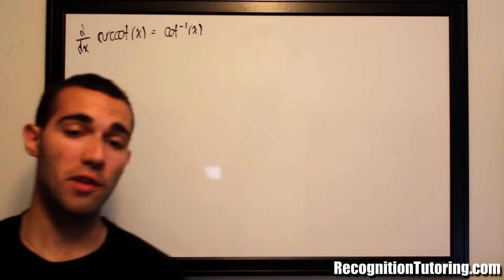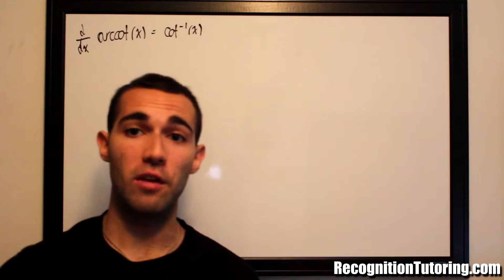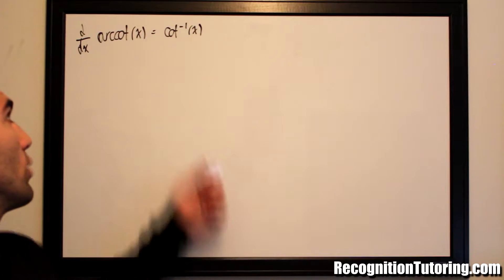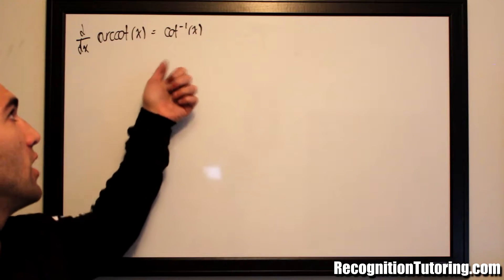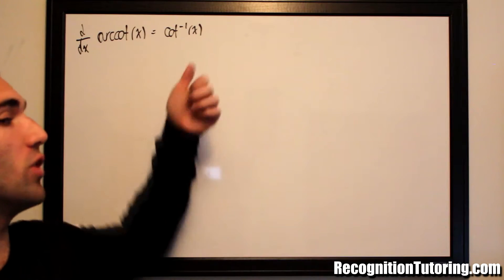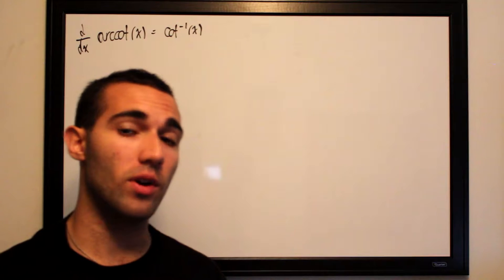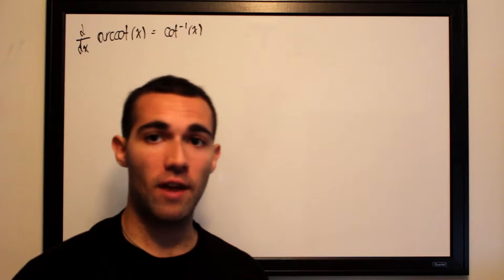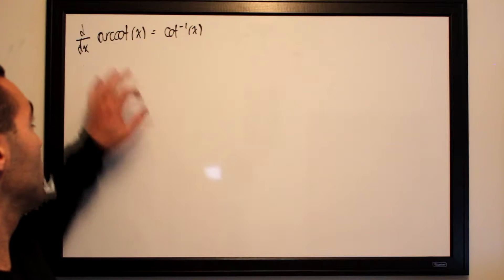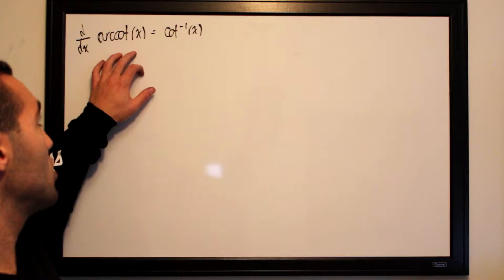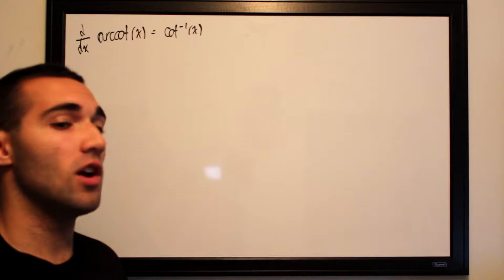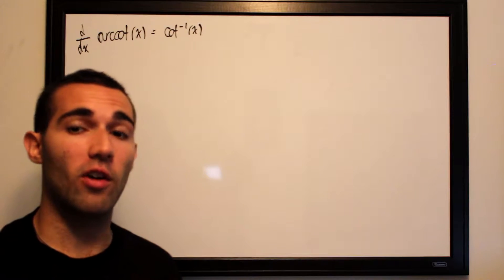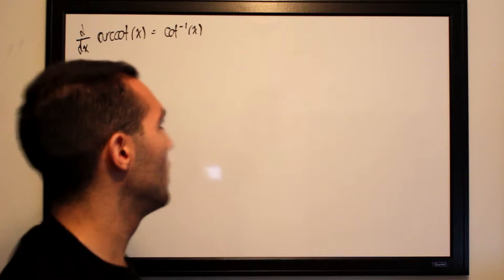This will be the last of the implicit differentiation inverse trigonometric function videos, and we will be taking the derivative of arc cotangent of x, which is also the cotangent inverse of x — whichever you prefer to call it. We will take advantage of the fact that arc cotangent and cotangent are inverses of each other and cancel each other out.